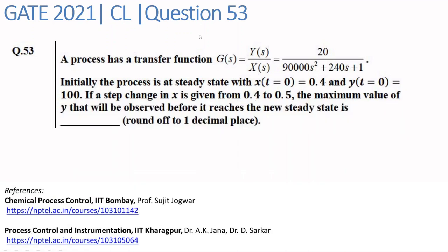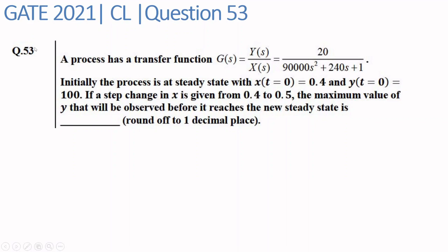We are solving question number 51 of the 2021 chemical engineering paper. The subject is instrumentation and process control. The question gives a process with transfer function G(s) = Y(s)/X(s) = 20 / (90000s² + 240s + 1). Initially the process is at steady state with x(0) = 0.4 and y(0) = 100. A step change in x is given from 0.4 to 0.5, and we need to find the maximum value of y before it reaches the new steady state.